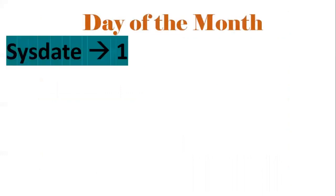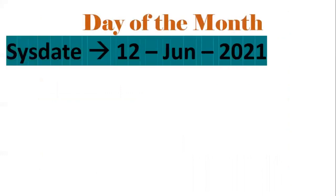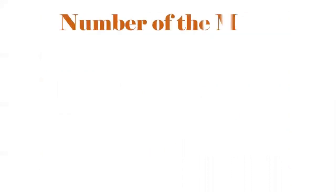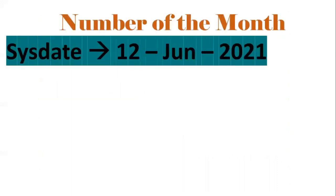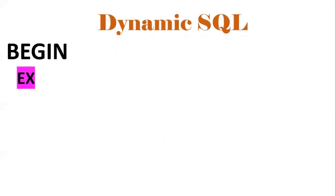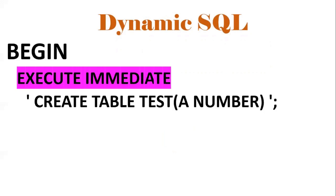To extract the day of the month from SYSDATE — today is 12th June 2021 — we use TO_CHAR(SYSDATE, 'DD'), which gives 12. To get the number of the month, TO_CHAR(SYSDATE, 'MM') gives 06 for June. For dynamic SQL, if you want to execute any DDL statement you use EXECUTE IMMEDIATE — that is the syntax. The reason for using dynamic SQL is that we can't use DDL statements directly in PL/SQL, that's why we use dynamic SQL.